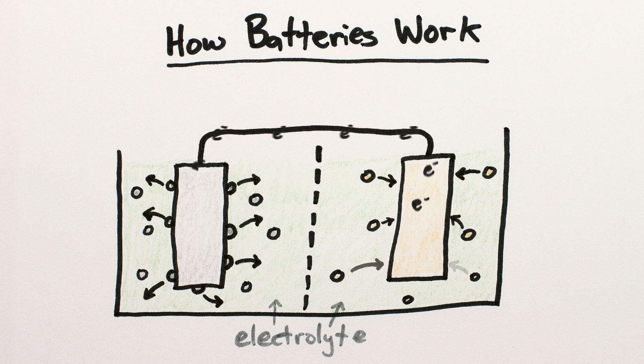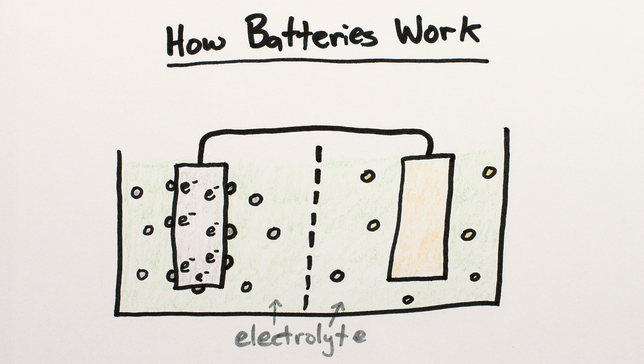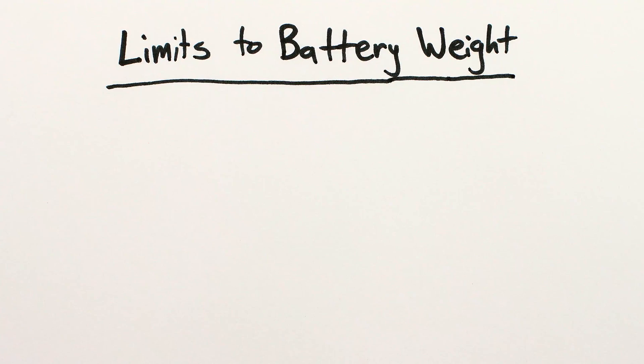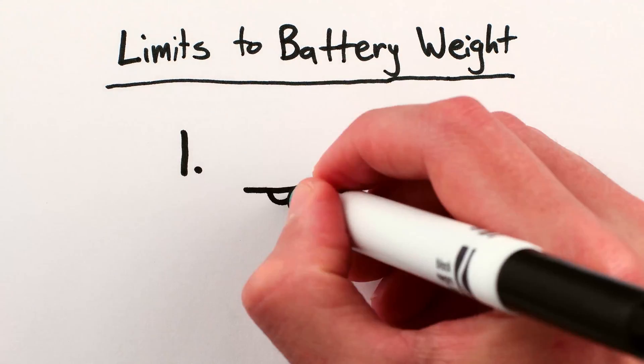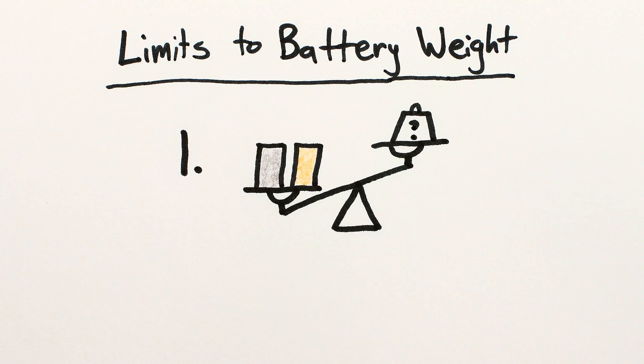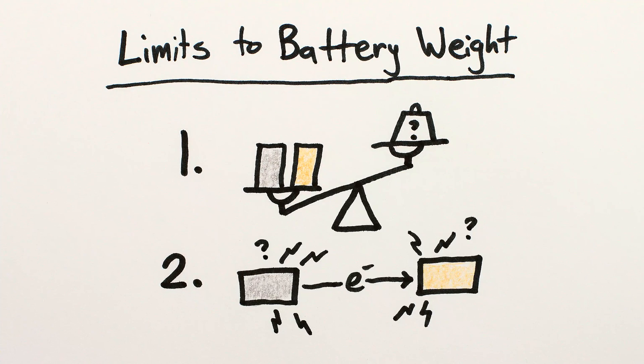And if you force electricity backwards through the wire, they'll reverse their dissolving and depositing, which we call recharging. The intrinsic limits to how lightweight batteries can be are imposed by two factors – the weight of the materials you use, and how much energy they give off per electron traded. So you want the lightest materials that produce the most energy per electron.